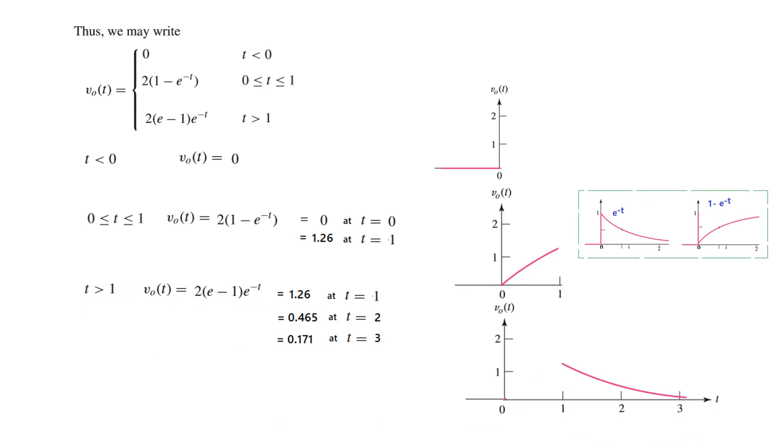And now we go to the third part. For T greater than 1, again we can put a couple of values. T equals 1, T equals 2, T equals 3. So it will be these values: 1.26, 0.5. So gradually it is decreasing like this for this part from 1 onwards. And this is our final result.